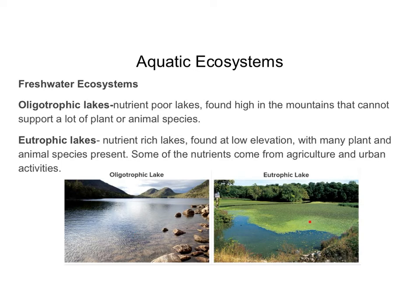At lower elevations, lakes are called eutrophic — nutrient-rich lakes with lots of plant and animal species. Sometimes they become overloaded with nutrients, causing algae blooms. Fertilizers from farms can run off into lakes, adding nutrients that cause excessive algae growth. Eutrophic lakes get a lot of runoff from agriculture, which contributes to the amount of nutrients they have.